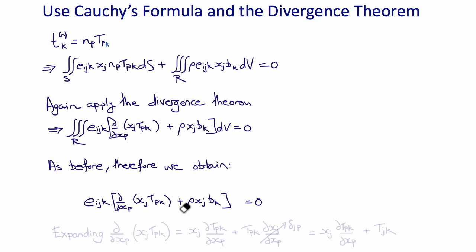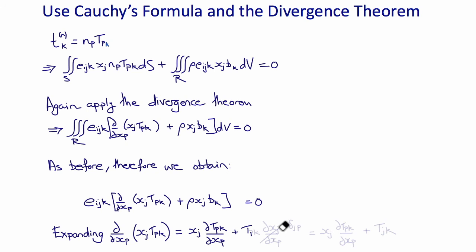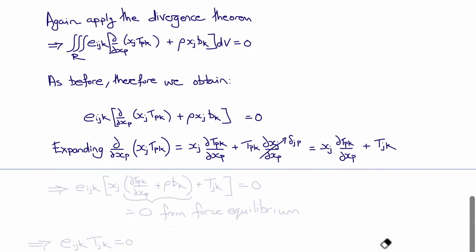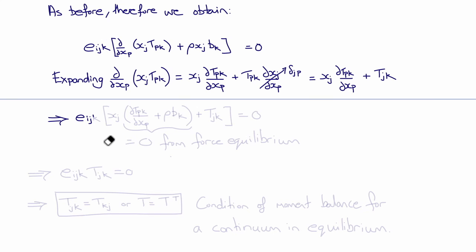Expanding the derivative ∂/∂xp of (Xj Tpk) using the product rule, we get Xj times ∂Tpk/∂xp plus Tpk times ∂Xj/∂xp. Since ∂Xj/∂xp equals delta jp, the second term becomes Tpk delta jp which equals Tjk. So the expression simplifies to Eijk times [Xj (∂Tpk/∂xp plus rho Bk) plus Tjk] equals zero.